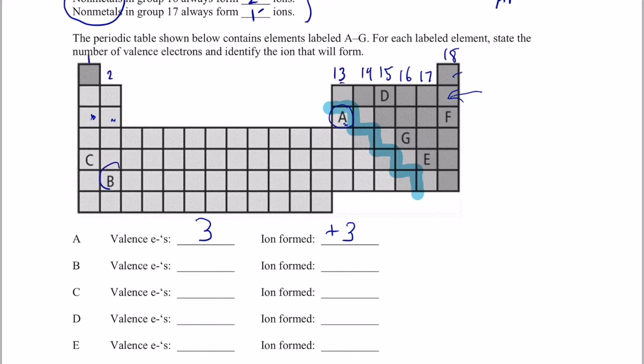All right. Element B. Here's element B right over there, folks. It's in group two, so it has two valence electrons. And elements in group two tend to lose two electrons to become like the noble gas before them. So this is positive two.